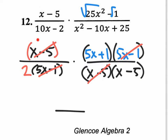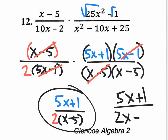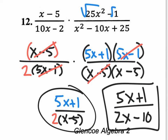The x minus 5 — if I call that a binomial x minus 5 — that binomial cancels out with one of these x minus 5s. So what I have left over: there's nothing left up here, but there is a 5x plus 1 up there. So I have a 5x plus 1 up on top. And on the bottom, I have 2 times x minus 5. You could write it 2 times x minus 5. Or you could say that your answer is 5x plus 1 over 2x minus 10 if you distribute. I would leave it in factored form like this.